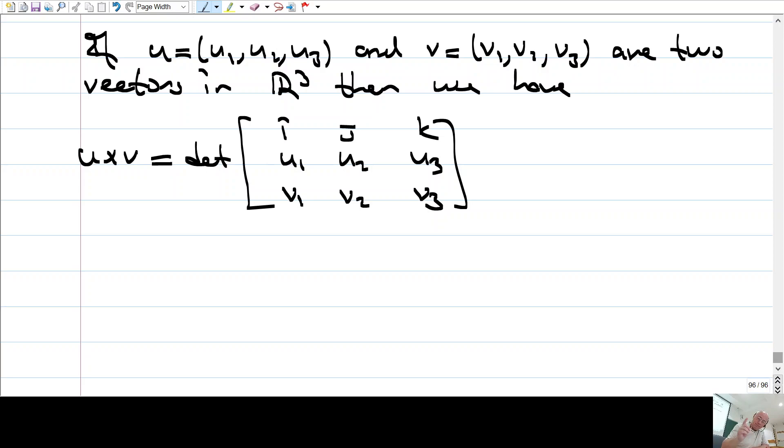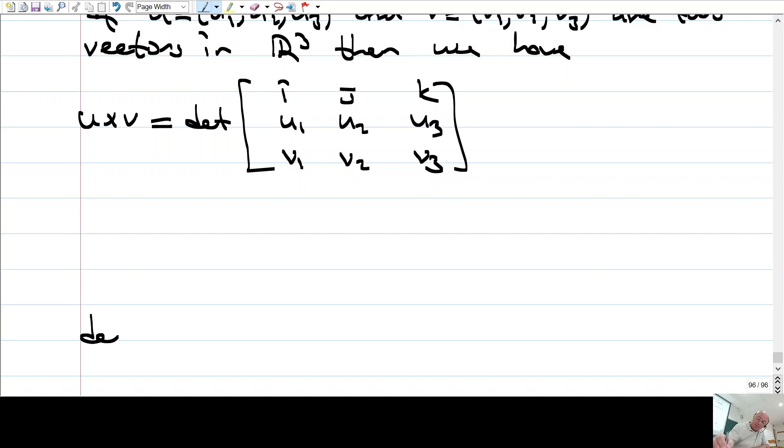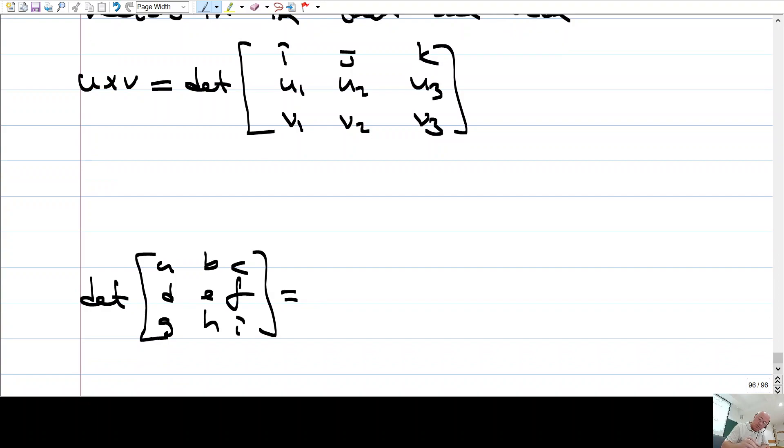It is defined as follows, determinant. You take i, isterseniz ilk önce şöyle yapayım, yani şunun determinantı a, b, c, d, e, f, g, h, i. Şöyle hesaplanıyor.